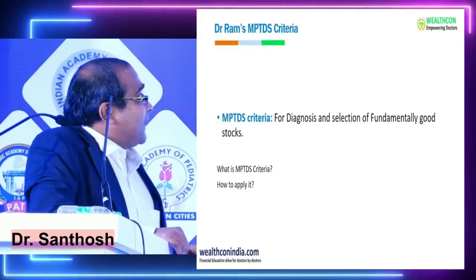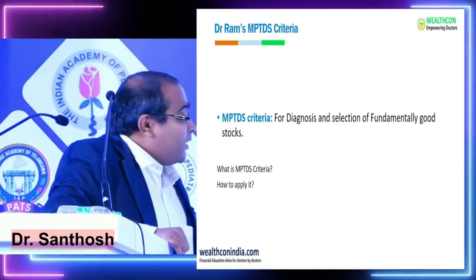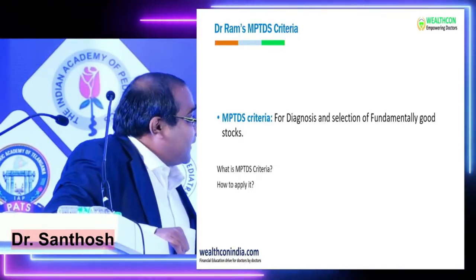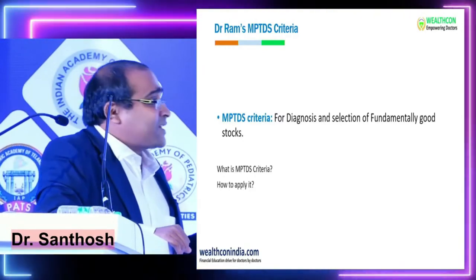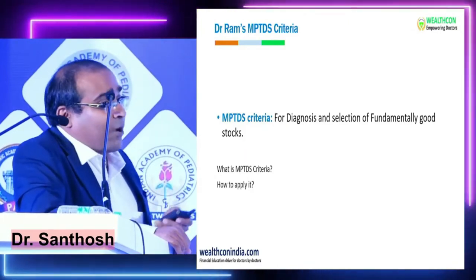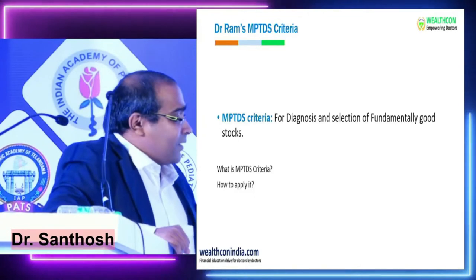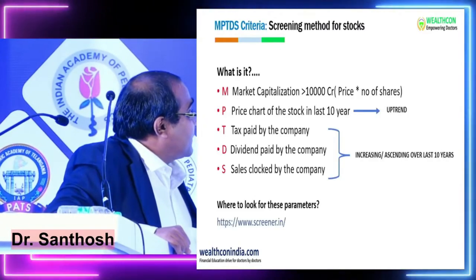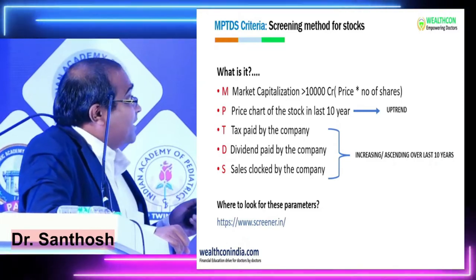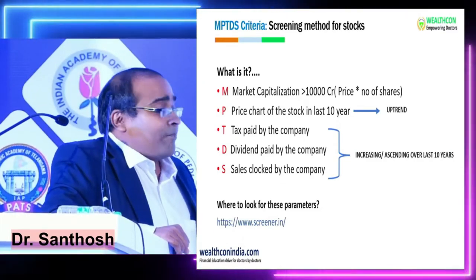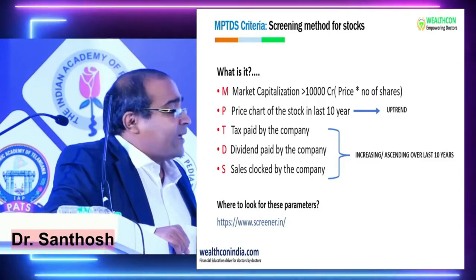The MPTDS criteria is for the diagnosis and selection of fundamentally good stocks. For beginners, stick to large-cap companies and let mutual funds handle mid-cap and small-cap. M in MPTDS stands for Market Capitalization — market cap should be more than 10,000 crores. Applying this filter on screener.com eliminates 5,700 out of 6,000 companies, leaving only large-cap or blue-chip shares.